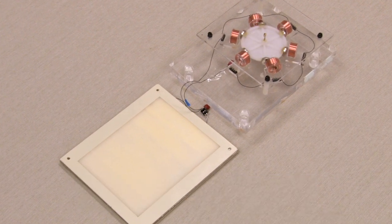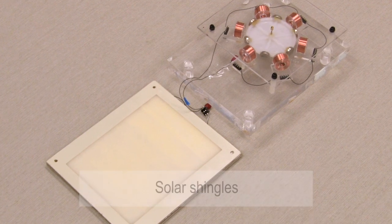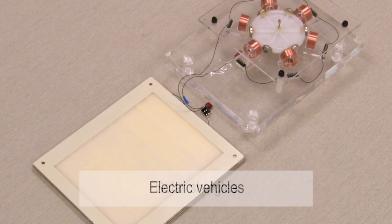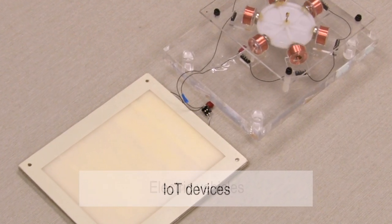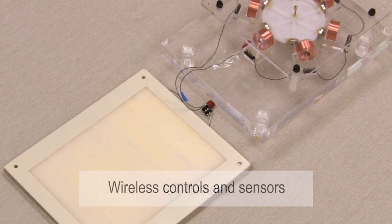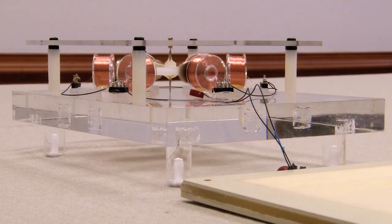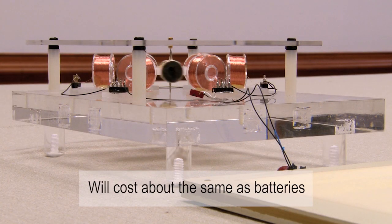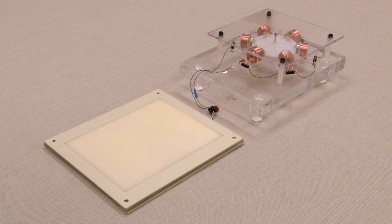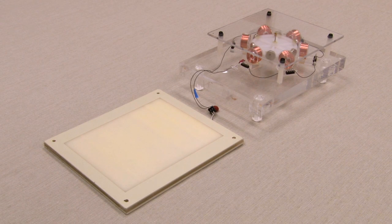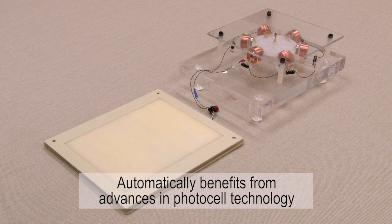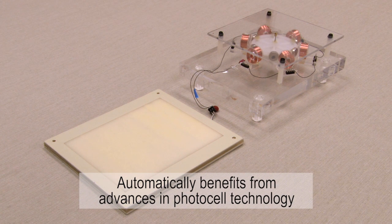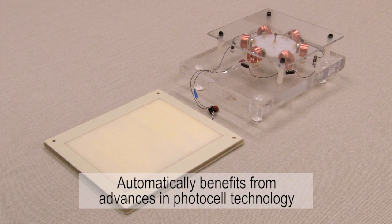With the revolutionary Spectral coating, countless devices will be able to collect and use solar or light energy and still look just like they look today. Spectral will cost about the same as the batteries it'll replace, and since the coating can be used with almost any photocell, Spectral will become more efficient and less expensive as photocells become more efficient and less expensive.